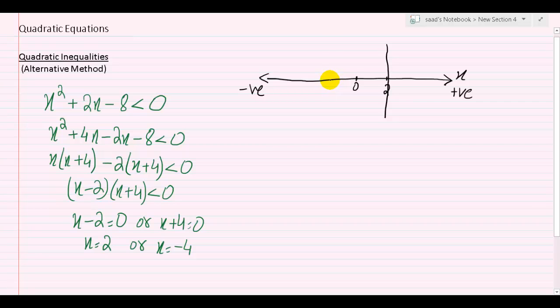And x equals to negative 4 will be somewhere over here. So minus 4. Again, let's draw a vertical line at x equals negative 4.